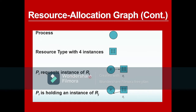When Pi requests an instance of Rj, the process is requesting the resource — for example, Adam wants one of the frying pans. When an assignment edge goes from a resource to process Pi, it means Pi is holding an instance of Rj. For example, Adam is holding one of the four frying pans, since the head of the edge points toward Adam. This is the basic concept behind the resource allocation graph.